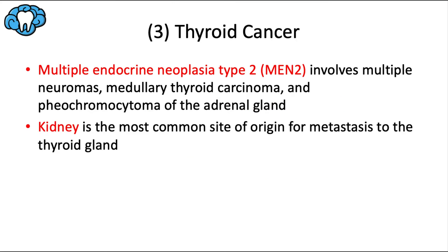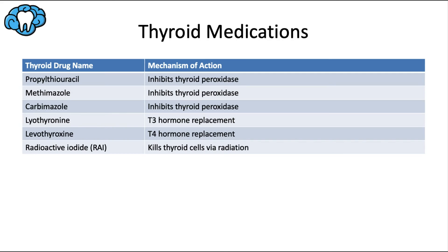The last thyroid disorder is thyroid cancer. Multiple endocrine neoplasia type 2 (MEN2) is worth noting because it was discussed in the oral pathology series regarding neuromas in the oral cavity. MEN2 is linked to medullary thyroid carcinoma and pheochromocytoma of the adrenal gland — all three are cardinal signs of MEN2. Also important for boards: thyroid cancer can result from metastasis from other tissues, and the kidney is the most common site of origin for metastasis to the thyroid gland.